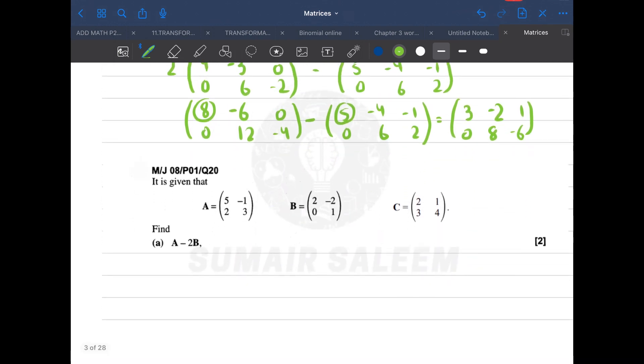Now comes this question. Many students get confused here. Let me clear the confusion also. 5, 2, -1, 3 minus 2 times B: 2, 0, -2, 1. They write 5, 2, -1, 3 and they multiply -2, that's -4, plus 4, then 0, then -2, and then they multiply both matrices. That's wrong. This is wrong.